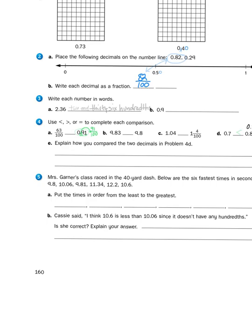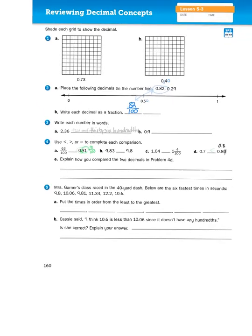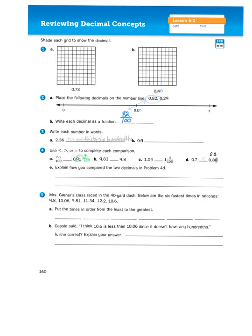The last thing I'm going to help you with is problem number five. It says, Mrs. Garner's class raced in the 40-yard dash, below are the six fastest times in seconds. Now, put the times in order from the least to the greatest.